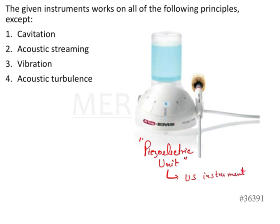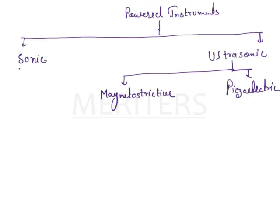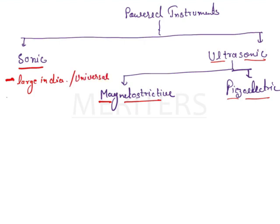I should tell you about the sonic and ultrasonic instruments — the basic powered instruments used in periodontology. The powered instruments can be sonic as well as ultrasonic. In the ultrasonic, we have two units: the magnetostrictive type and the piezoelectric unit. Now, let's see a little bit about the sonic instruments. In periodontology, we use sonic scaler tips, which are generally large in diameter and universal in design — adapted to all tooth surfaces.